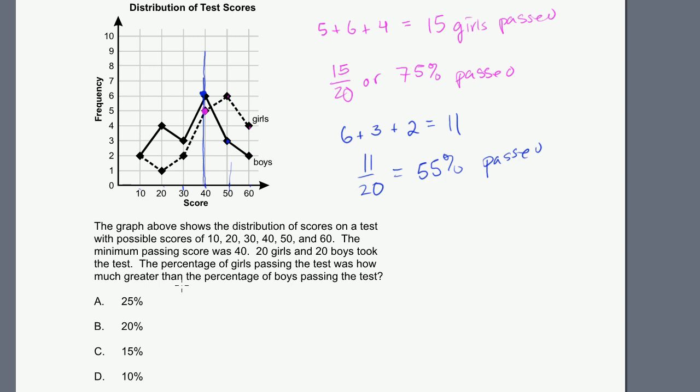Now what did they ask us? The percentage of girls passing the test was how much greater than the percentage of boys passing the test? So 75% is how much greater than 55%? Well 75% minus 55%, that's 20%. The girls' percentage is 20% larger than the boys' percentage. It was larger by 20%. Next question.